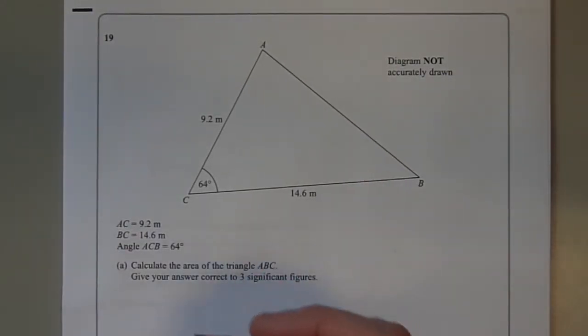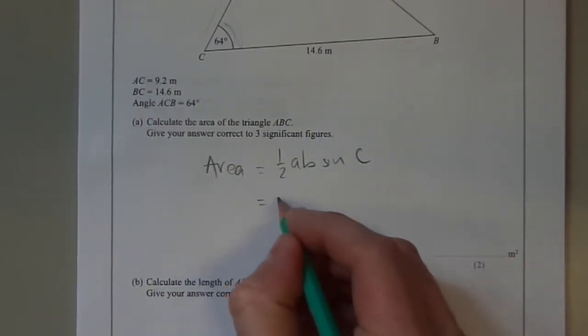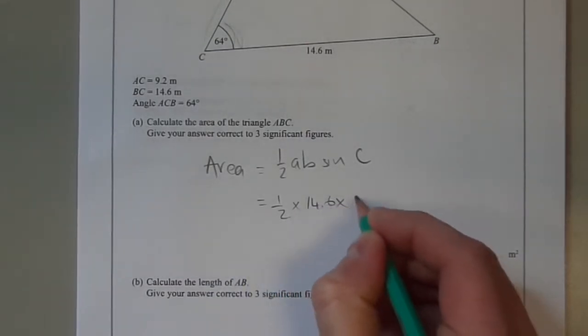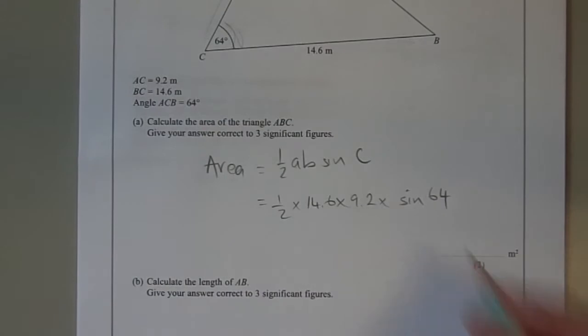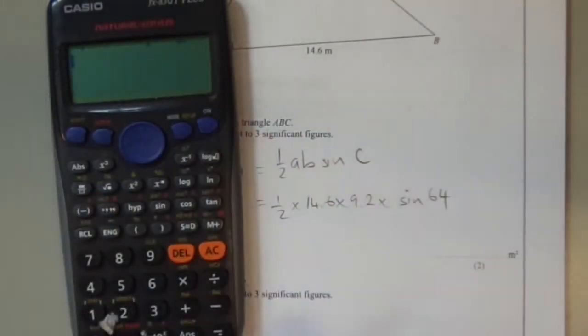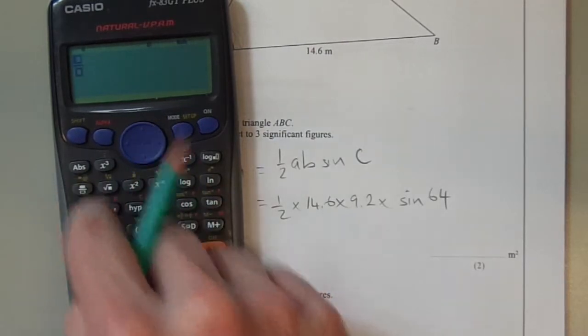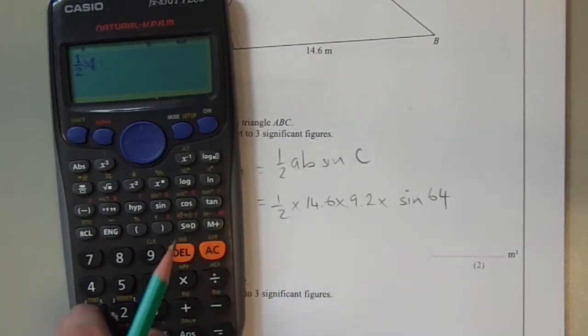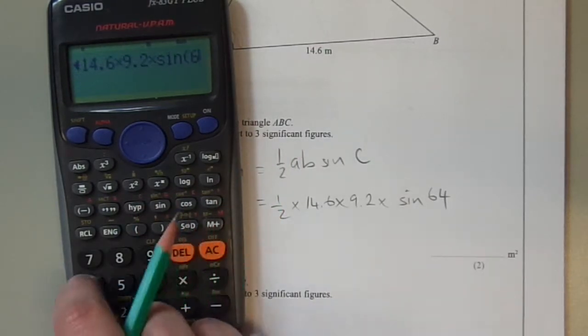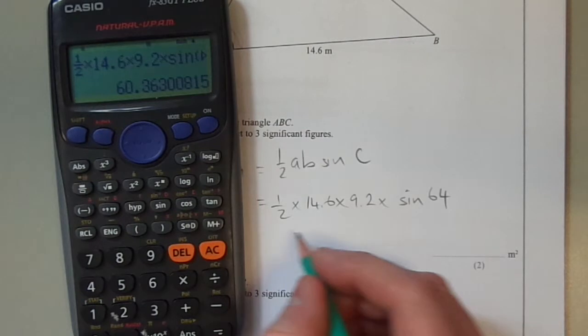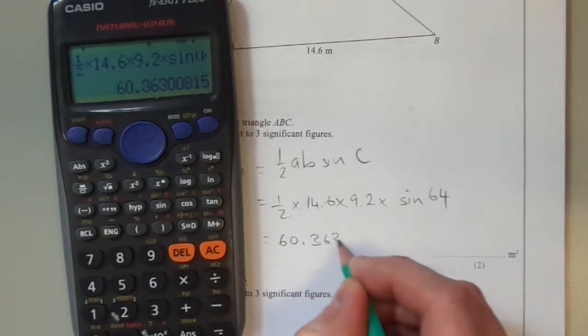This is a question where we need to use the formula area equals half AB sine C to find the area of the triangle, where A and B represent two sides and C is the angle in between those two sides. So substituting those values into the formula: half times 14.6 times 9.2 times sine of 64.